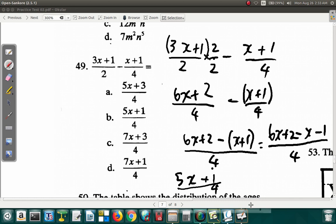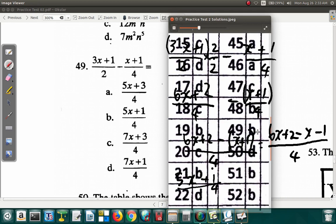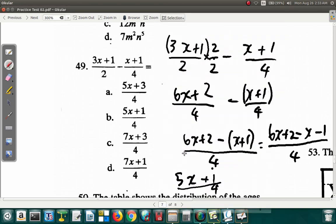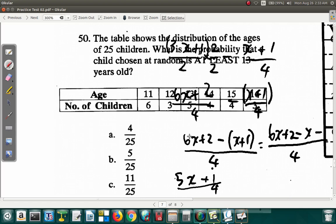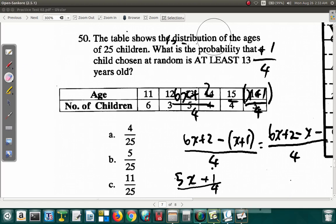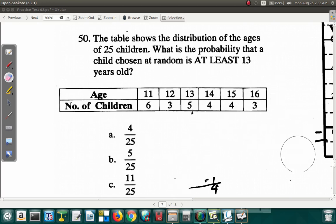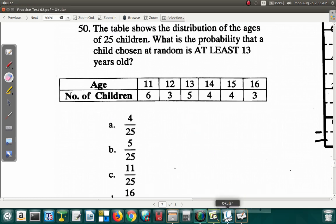So 49 is b. So question 49 b. Alright. Let's look at question 50 and see what 50 is saying. Let's erase these rough work. The table below, or the table, shows the distribution of ages of 25 children.